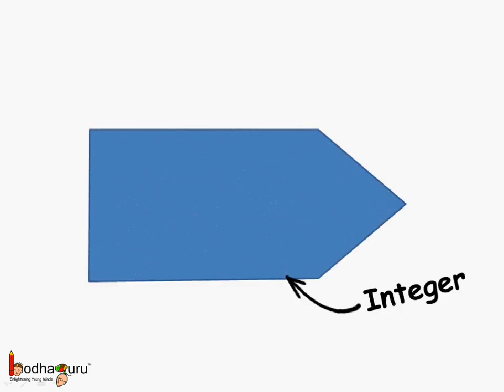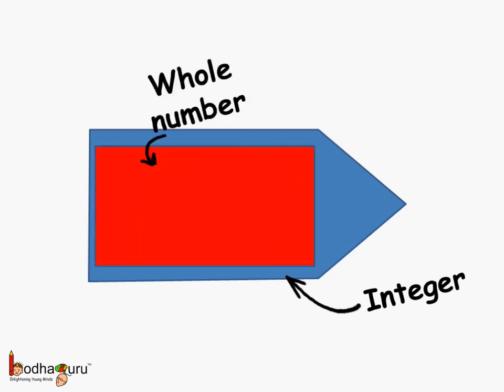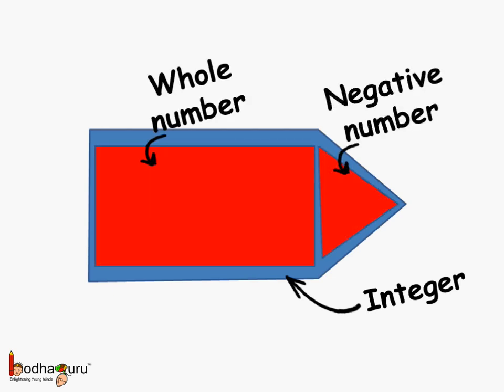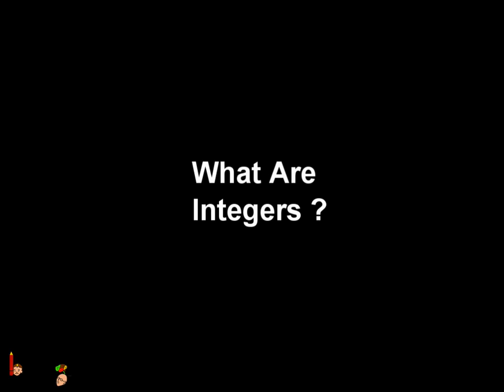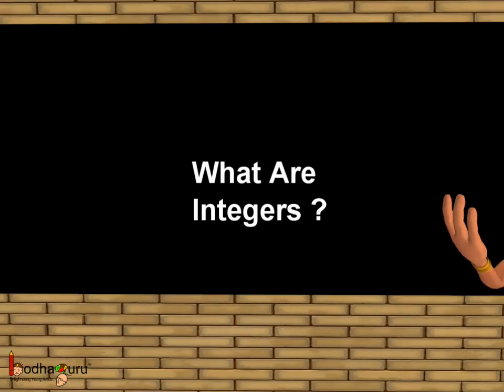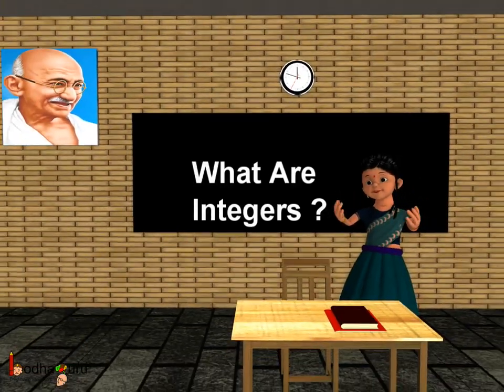Remember children, what are integers? Integer is a collection of whole numbers and negative numbers, where whole numbers consist of 0 and the natural numbers or the counting numbers. So, that was all about integers. Bye-bye, children.